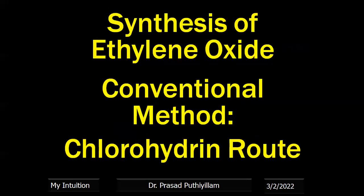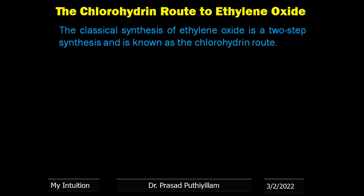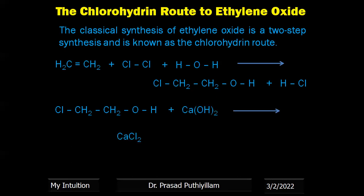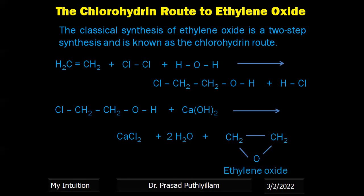In the conventional method, the chlorohydrin route, in the classical synthesis of ethylene oxide, a two-step synthesis is taken. Ethene (CH₂=CH₂) is treated with chlorine gas (Cl₂) and water (H₂O) to give 2-chloroethanol and HCl as a byproduct. The 2-chloroethanol is then treated with calcium hydroxide in the second step, giving side products calcium chloride and water, as well as the desired product ethylene oxide — CH₂-CH₂ with oxygen as a ring structure.